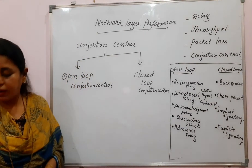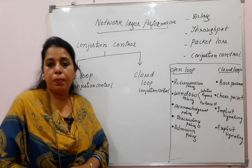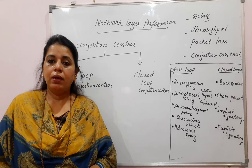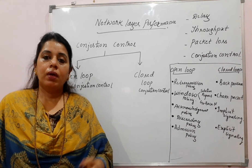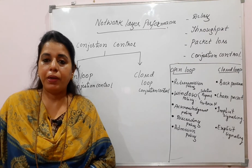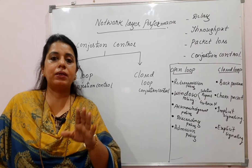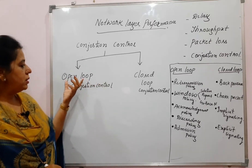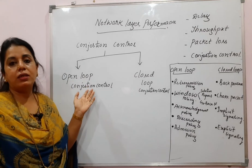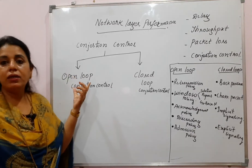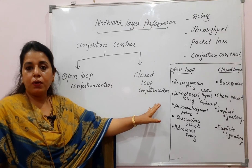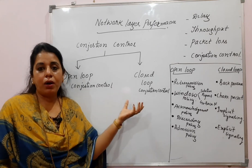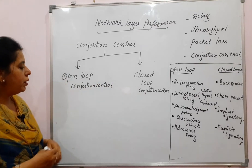We have two types: open loop congestion control and closed loop congestion control. As an analogy, open loop is like a person taking precautions so a disease does not happen, while closed loop is like taking treatment after the disease has already occurred. Open loop policies control congestion before it occurs; closed loop mechanisms address congestion that has already occurred.